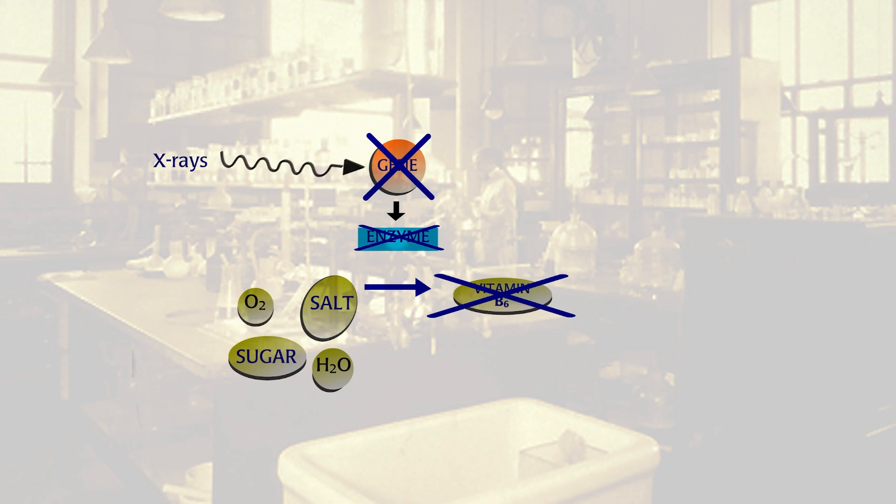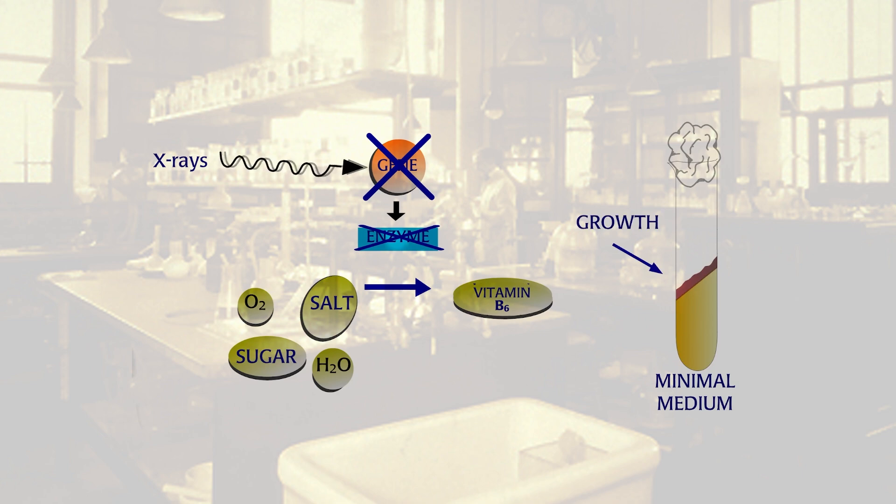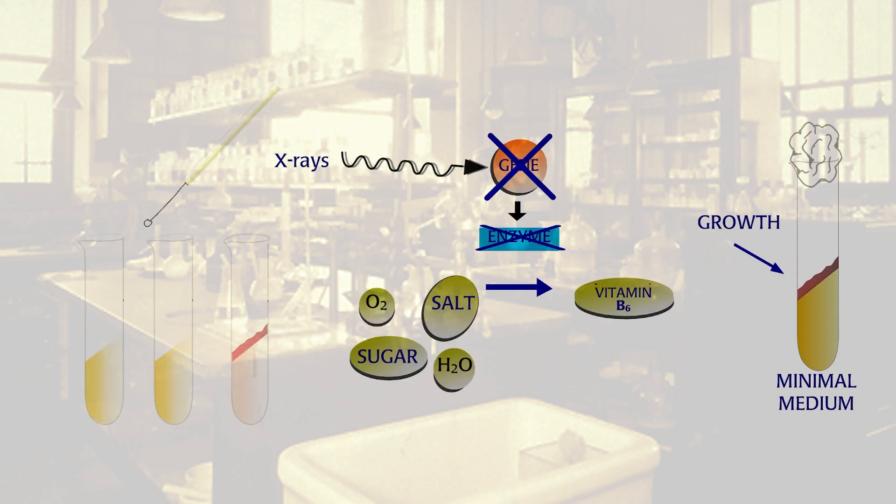Thus, the gene making this enzyme must have been mutated by X-rays. By adding vitamin B6 as a supplement to the minimal medium, the mutation could be compensated for and culture 299 could grow.